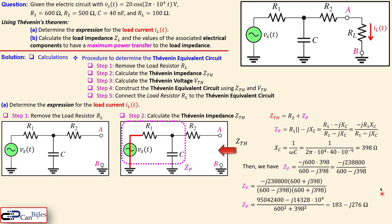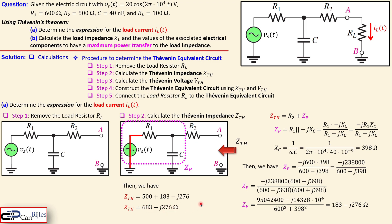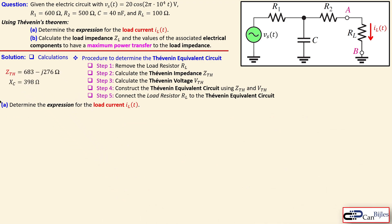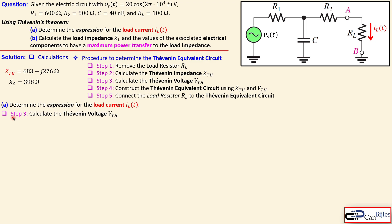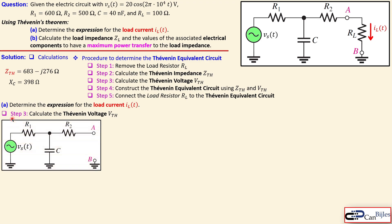Now we add R2 to ZP. R2 is 500 ohms, so ZTH = 500 + 183 − j276 = 683 − j276 ohms. With these two values determined, we move to step three: calculating the Thevenin voltage VTH.